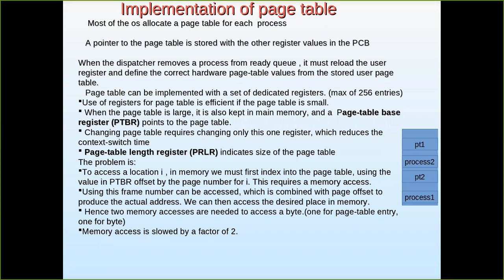The restriction is that all the memory of the user process must be present in the main memory. Suppose the user process is 4K, then 4K space must be in the main memory. But the restriction removed here is it is not necessary that all the 4K are in contiguous locations — 1K in one place, 1K in another place, another 1 or 2K somewhere else. It can be split. That is the relaxation from contiguous memory allocation in paging.